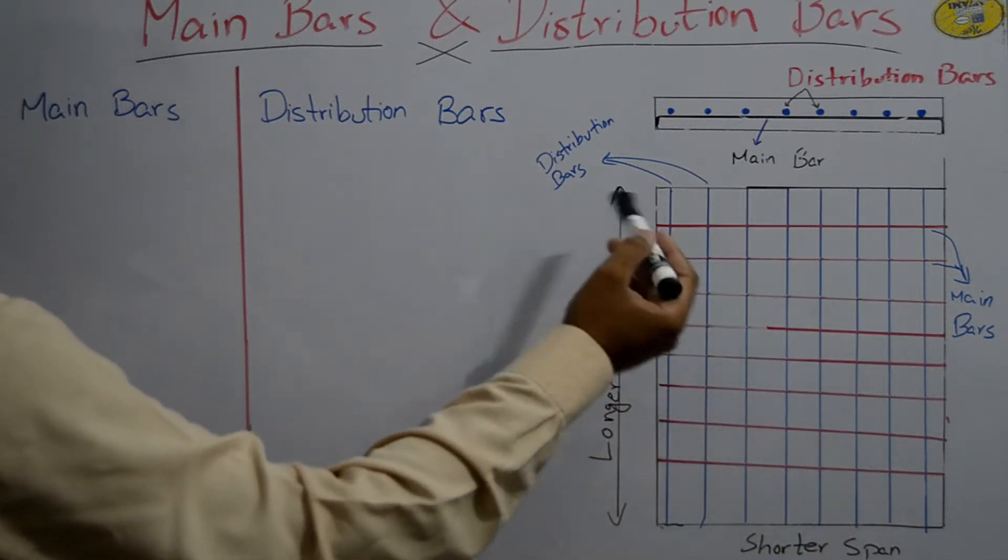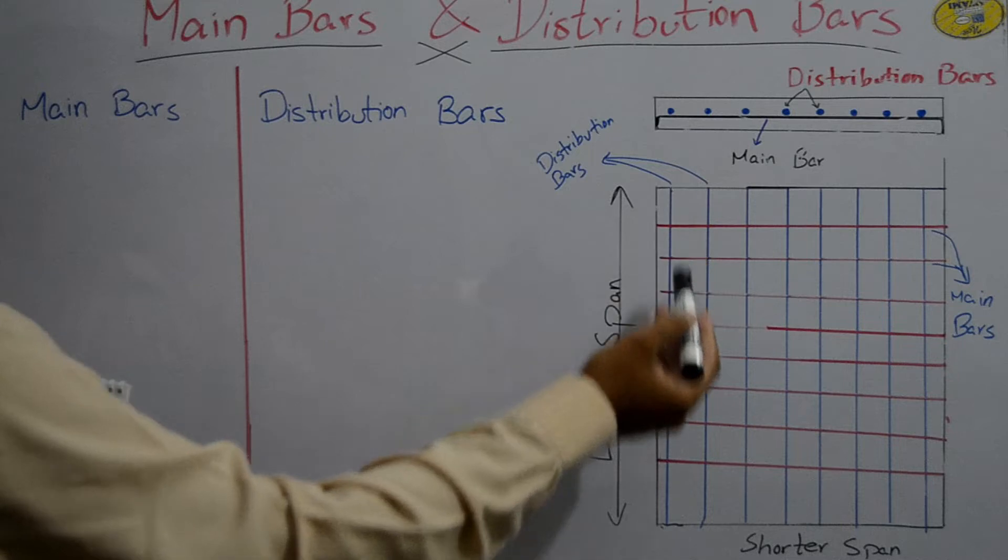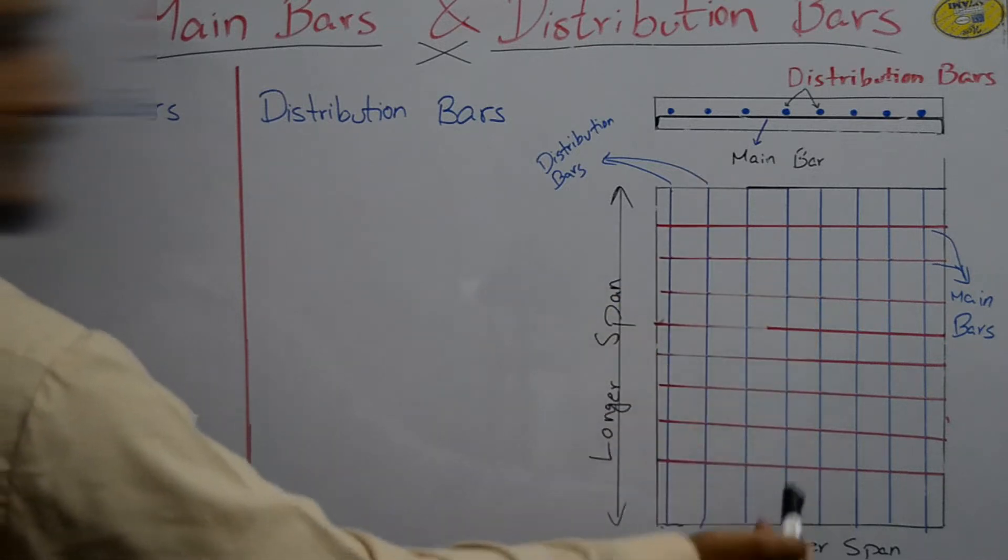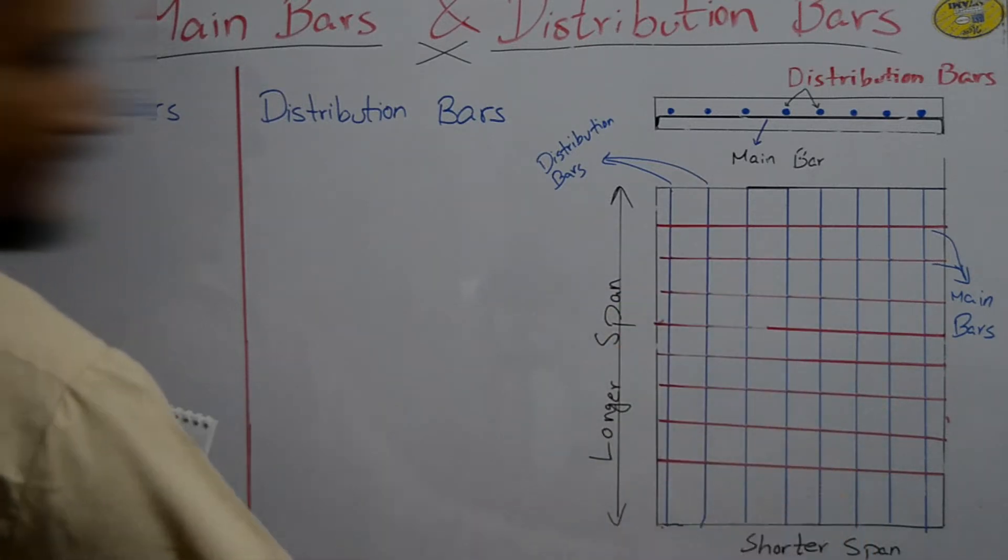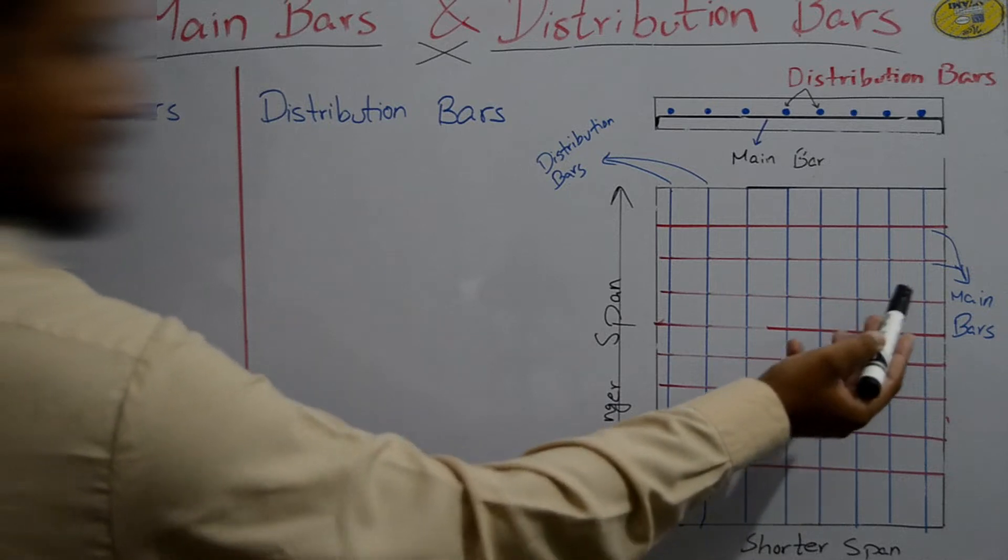Here you see that distribution bars are on longer span, and the main bars are on shorter span.